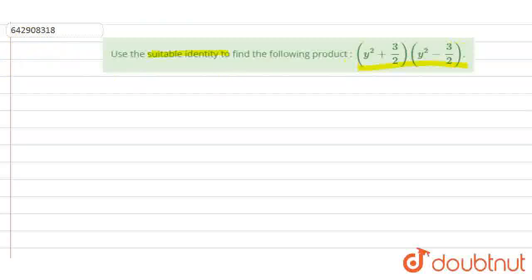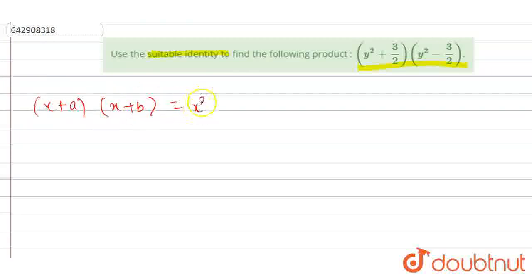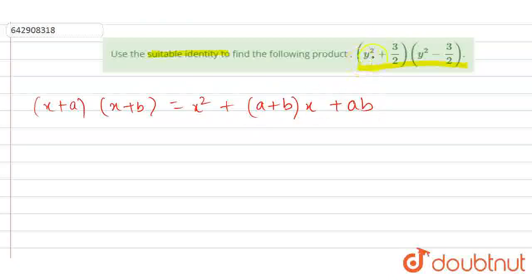How to solve this? First of all, the identity is: x plus a, x plus b is equal to x squared plus (a plus b)x plus ab. Here, x is y squared, a is 3 by 2, and b is minus 3 by 2.